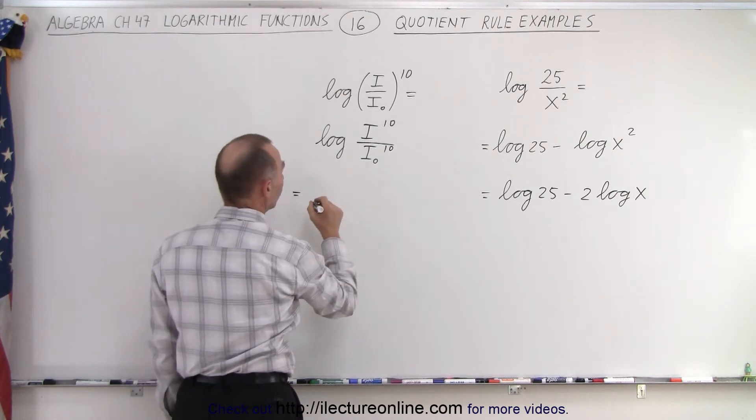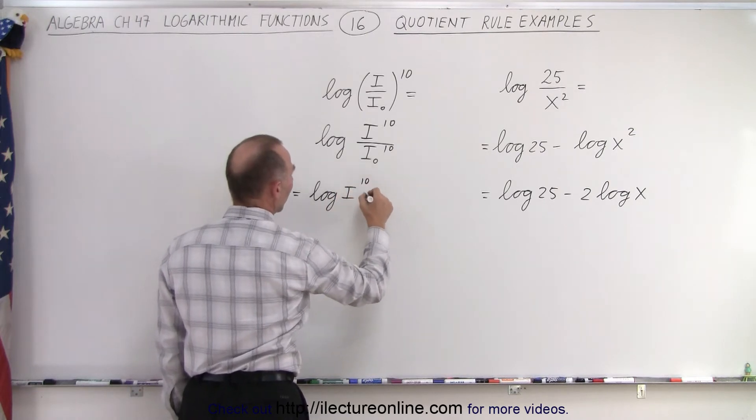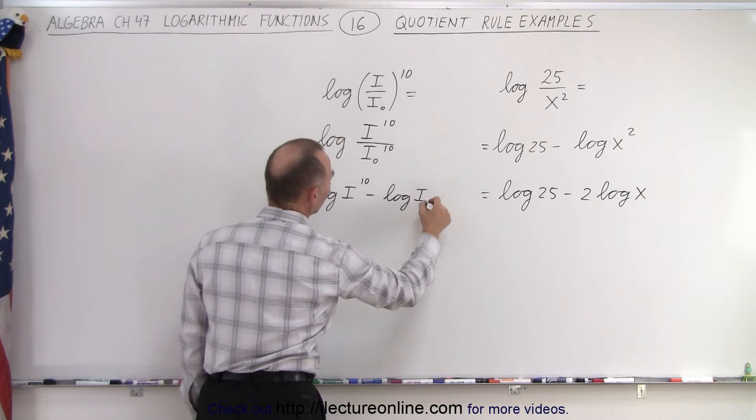So this is equal to the log of the numerator, which is i to the 10th power minus the log of the denominator, which is i sub naught to the 10th power.